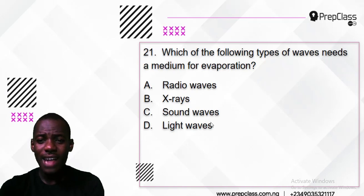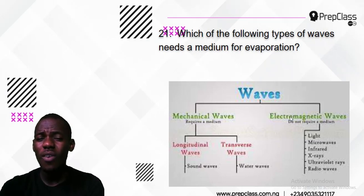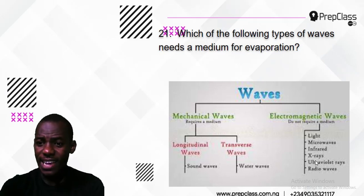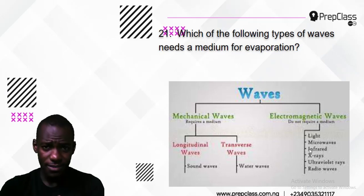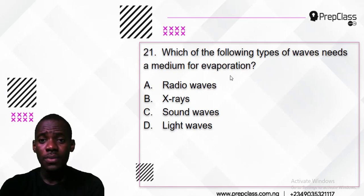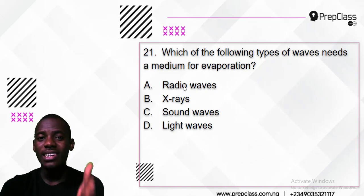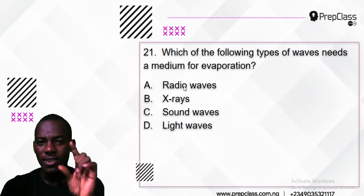Do you have any idea — is it radio waves, x-ray, sound wave, or light wave? All of them are actually electromagnetic except one. Remember the electromagnetic waves — they are summarized by the mnemonic RIVOXG: R is radio waves, I is infrared, V is visible light, U is ultraviolet ray, X is x-ray, and G is gamma. Those are the electromagnetic waves that do not need a medium. So radio wave does not need a medium — it is out.